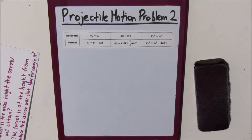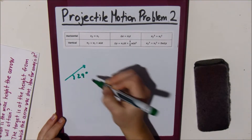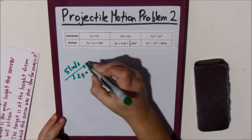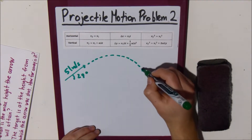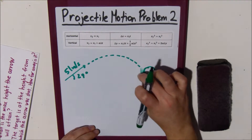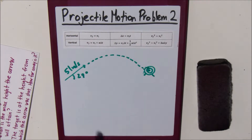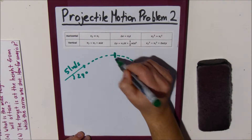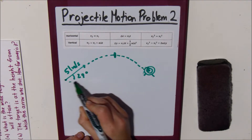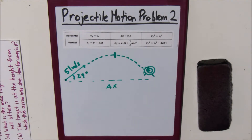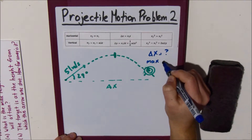First off, let's draw a little diagram. Here's our arrow, and our angle measurement is 29 degrees and its velocity is 51 meters per second. It has to follow a path something like a parabola, because gravity affects its path. It hits the target over here. Using this diagram, we're trying to find the maximum height and delta x — the horizontal distance from where the arrow was shot.